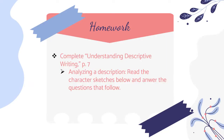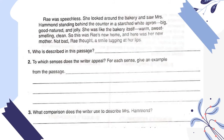Now it's your turn. You're going to complete the Understanding Descriptive Writing on page seven, analyzing a description. You have to read the character sketches below and answer the questions that follow. A character sketch is basically a little story used to describe a particular person. Here's the first one: 'Ray was speechless. She looked around the bakery and saw Mrs. Hammond standing behind the counter in a starched white apron — big, good-natured, and jolly.' Jolly means happy. 'She was like the bakery itself: warm, sweet-smelling, and clean. This was Ray's new home, and here was her new mother. Not bad, Ray thought, a smile tugging at her lips.'